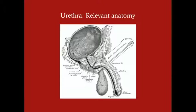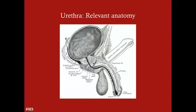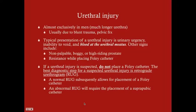In a female there's just one segment of urethra, but in a male there are various portions: the prostatic urethra, the membranous urethra, and the penile urethra. The membranous urethra is the part between the prostate and the penis. Another important anatomical area is the urogenital diaphragm, also called the triangular ligament or urogenital ligament.